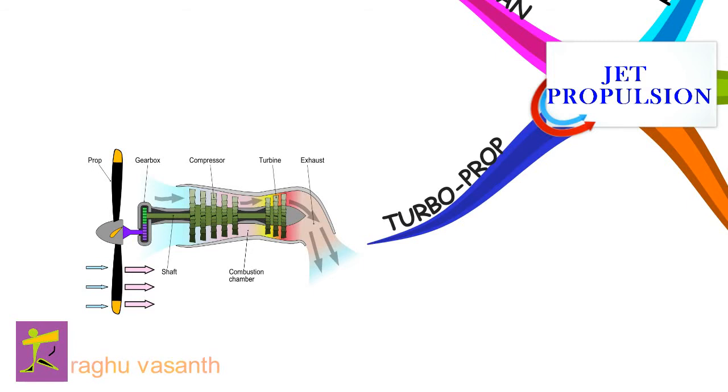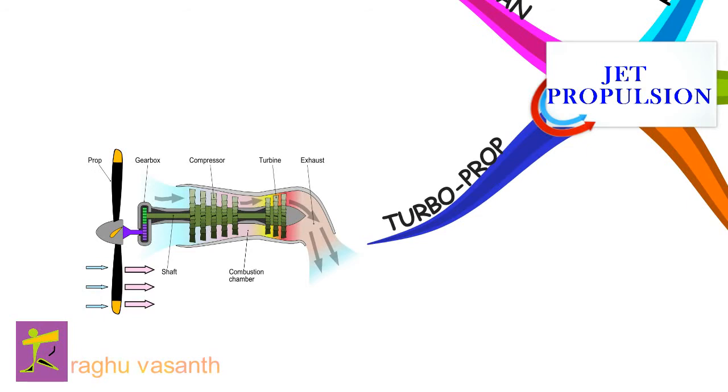Further expansion of the gases occurs in the propelling nozzle, where the gas is exhausted to atmospheric pressure. The propelling nozzle provides a relatively small proportion of the thrust generated by a turboprop.